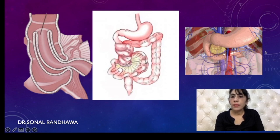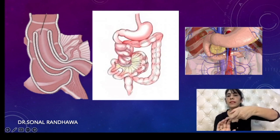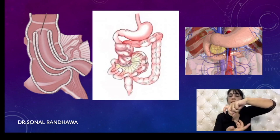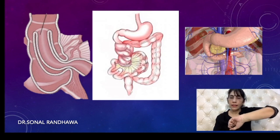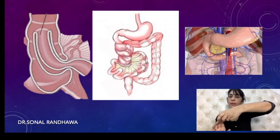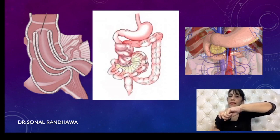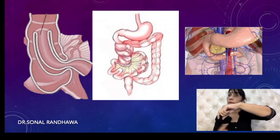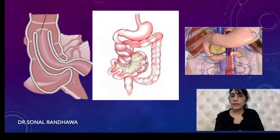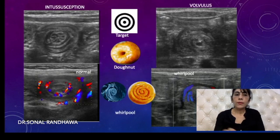In volvulus, the mesentery twists clockwise, so the vein wraps around the superior mesenteric artery. The more times it twists, the more loops there will be. Not only has the intestine twisted, but the vessels have also twisted along with it. As a result, there will be multiple circles of vessels visible.